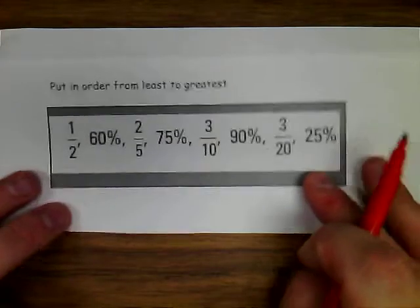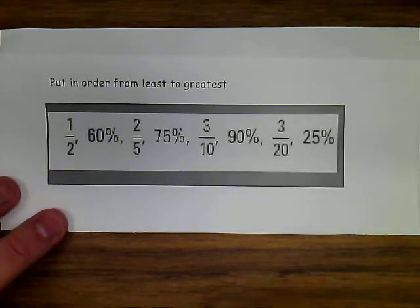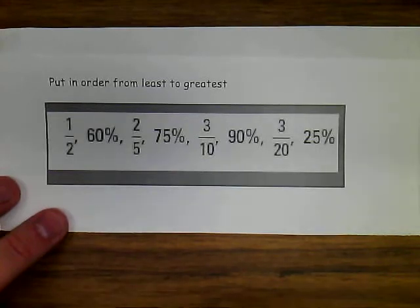So, if I have a variety of fractions and percents, and I want to put them in order from least to greatest, a good strategy to use would be to change them to percents, because percents are always comparing out of 100, so you don't need to worry about a common denominator. So, in this case,